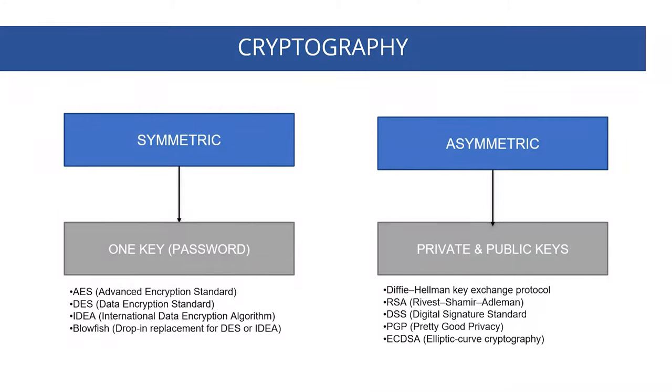Here is a short list of the most prominent asymmetric protocols and standards: Diffie-Hellman Key Exchange Protocol, RSA, Digital Signature DSS, PGP, EC-DSA, and a number of others. When you hear someone say 'modern cryptography,' they are referring to asymmetric cryptography.